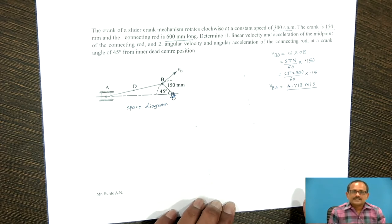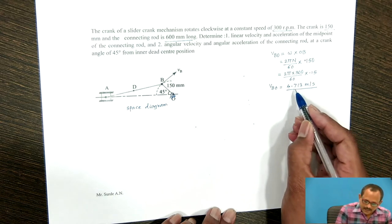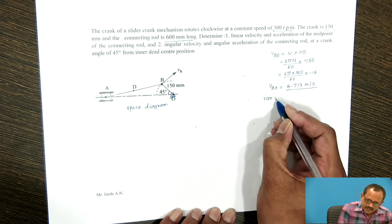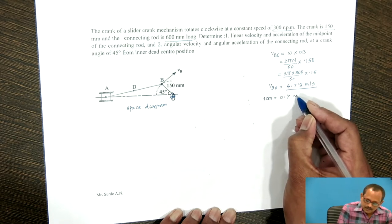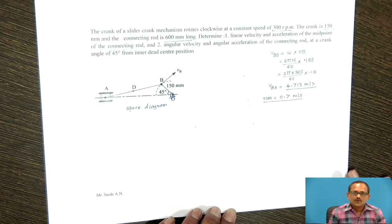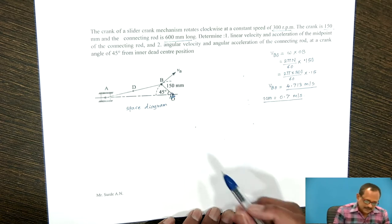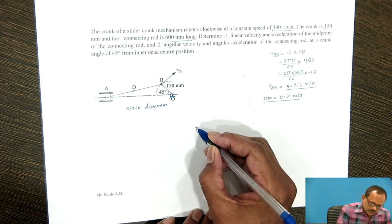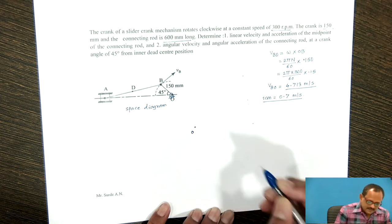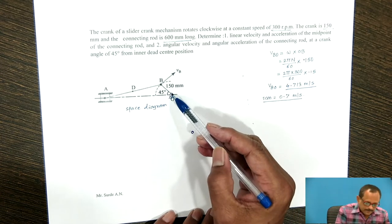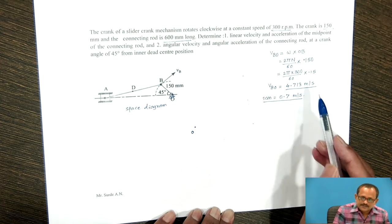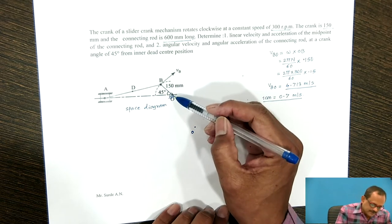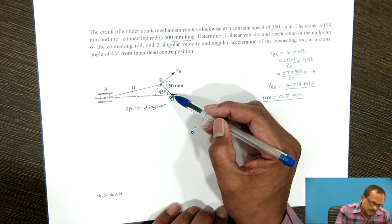For drawing the velocity triangle, take a suitable scale depending upon the magnitude of V_BO. I will take the scale as 1 centimeter equal to 0.7 meters per second. First, mark the fixed point in space. As point O is fixed in the space diagram, mark point O as the fixed point or pole. The velocity of B with respect to O, whose magnitude is 4.713 meters per second, will be perpendicular to link OB.